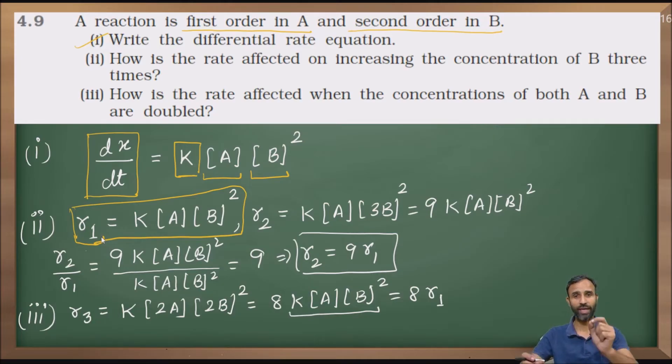Three times means 3 multiplied by B. Now, K rate constant remains same, concentration of A remains same, but concentration of B is now three times. So it is 3B raised to power 2. Therefore, 3B raised to power 2. So 3 times 3 is 9, so 9 times R1.